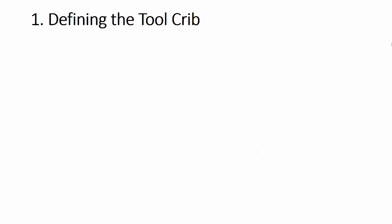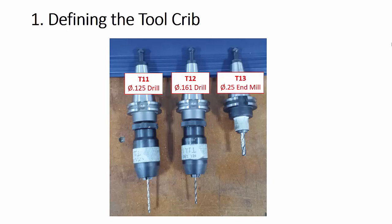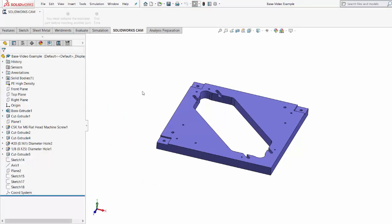Now let's talk about each step in more detail, starting with defining the tool crib. In the MakerLab, I have set up three tools we'll use to machine the base of the 3D printer. Tool 11 is an eighth-inch diameter drill bit. Tool 12 is a number 20 drill bit, which is a .161 inch diameter. And tool 13 is a quarter-inch flat end mill.